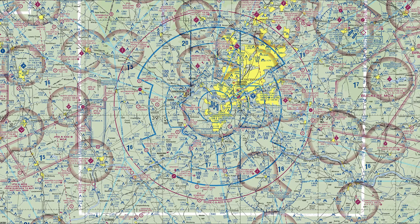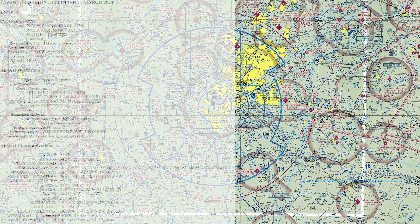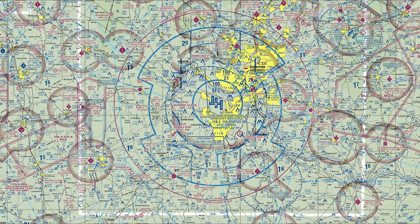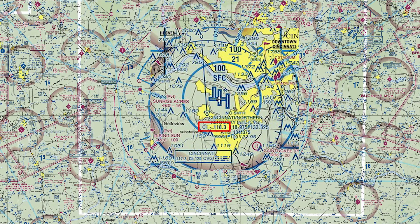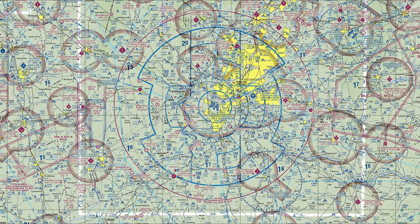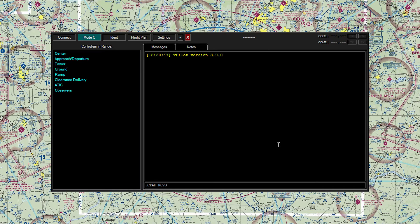Whether it be clearance and delivery all the way to center, the appropriate frequency to use would be CTAF. How do you find the CTAF frequency? In almost every instance, the CTAF frequency will be the first listed tower frequency. Here I have pulled up tower frequencies from airnav.com, a very useful website. The first tower frequency listed is 118.3 — this would be the CTAF frequency for Cincinnati. Notice also on the VFR sectional, the first tower frequency listed is also 118.3.